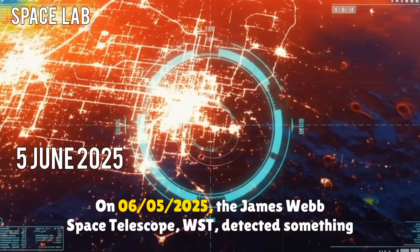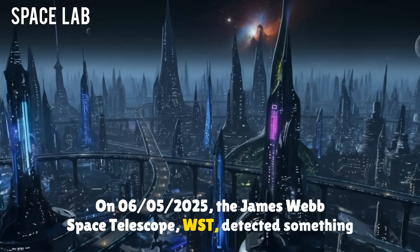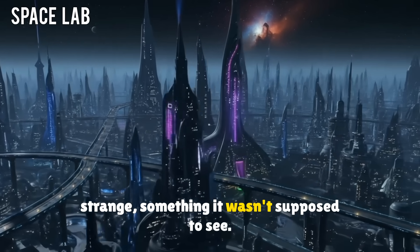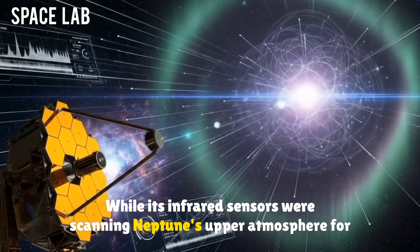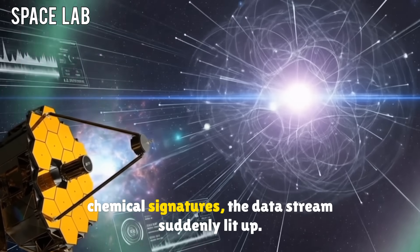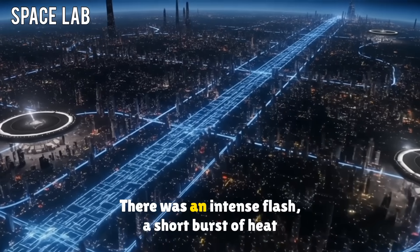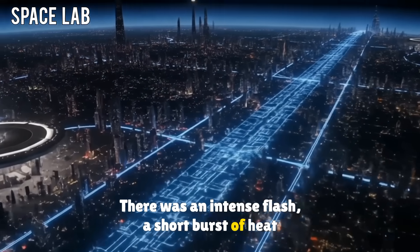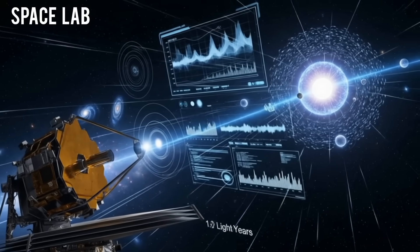On June 5, 2025, the James Webb Space Telescope detected something strange, something it wasn't supposed to see. While its infrared sensors were scanning Neptune's upper atmosphere for chemical signatures, the data stream suddenly lit up. There was an intense flash, a short burst of heat and energy, concentrated in a region that was previously cold and undisturbed.